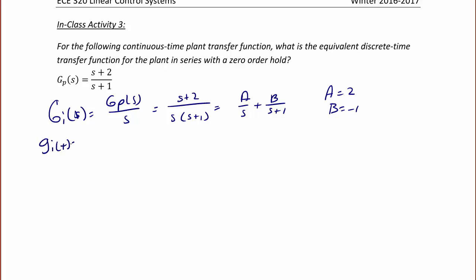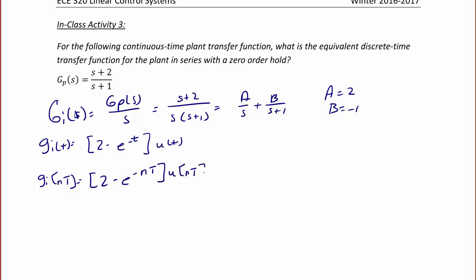So g_i(t) is equal to (2 minus e^(-t)) u(t), or g_i(nT), the discrete time function, is equal to (2 minus e^(-nT)) u(nT). So now we take the Z-transform of g_i(nT), and we get 2z/(z - 1) minus z/(z - e^(-T)).